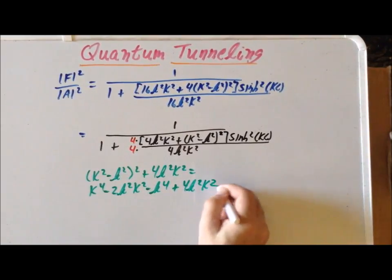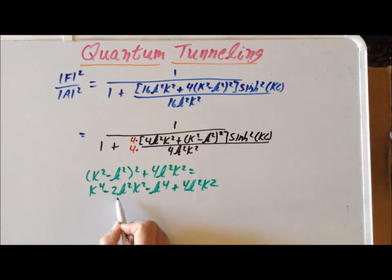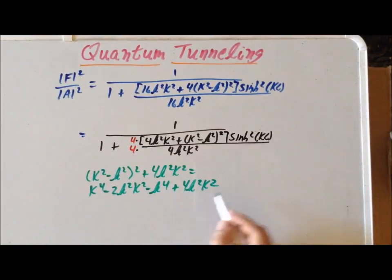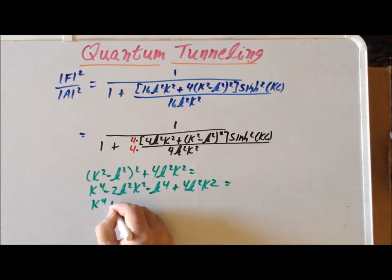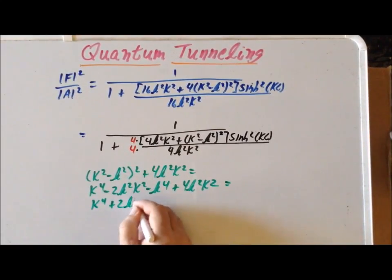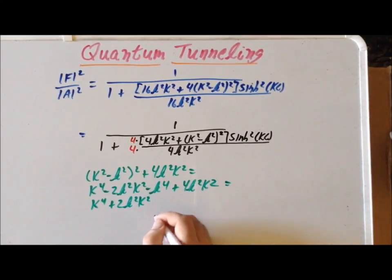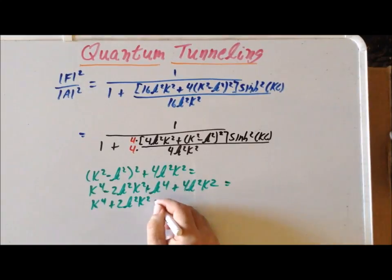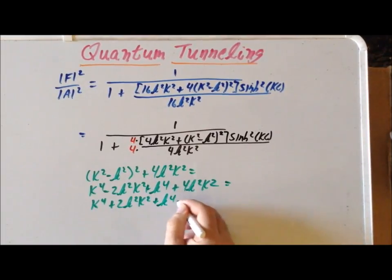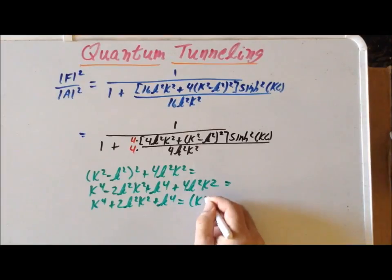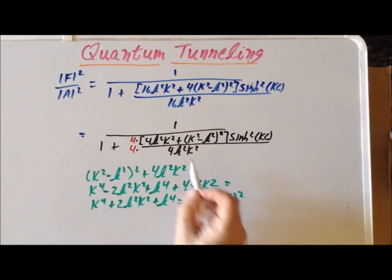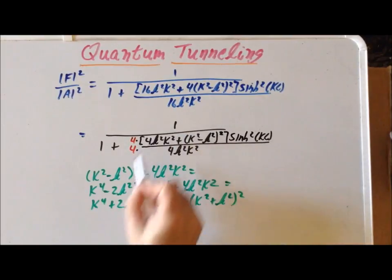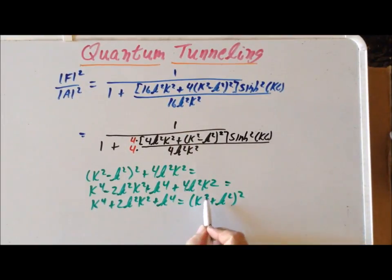We notice we can combine the minus 2 small k squared big K squared terms, which gives us the result of K to the fourth plus 2 k squared big K squared plus K to the fourth. We can rewrite this as big K squared plus small k squared, quantity squared. So that allows us to replace the expression inside the bracket simply with big K squared plus small k squared, quantity squared.